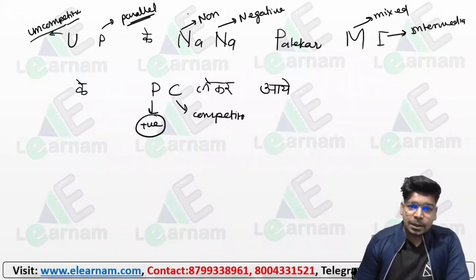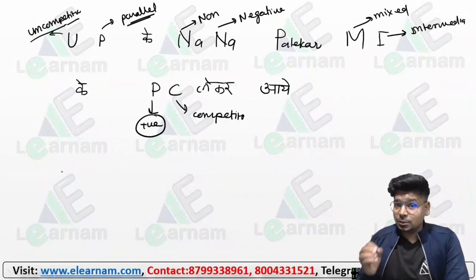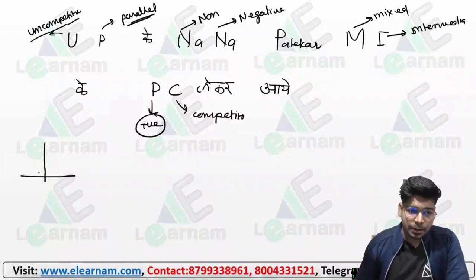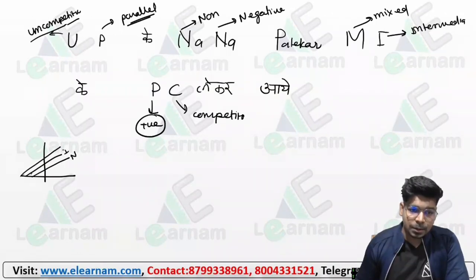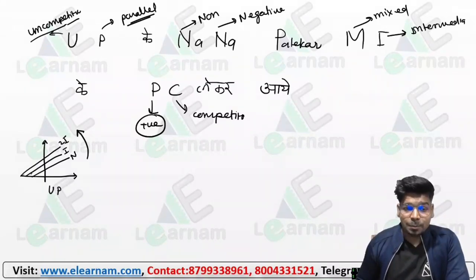UP ke NANA-PARTICLE PC lelay karay. Agar aap ish cheez ko dekhne ki koshish karayay — UP matlab uncompetitive mein hamesha yeh parallel chalega. Yeh normal hai, yeh inhibitor hai, yeh 2-inhibitor. Graph hamesha aise chal raha tha — yeh hai uncompetitive parallel.